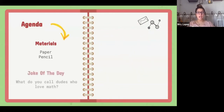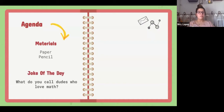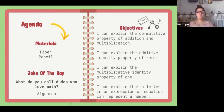Okay, welcome back. We have a joke of the day: what do you call dudes who love math? If you said algebra, then you're right — those are dudes who love math. Our objectives today: we have four objectives. They seem like a lot, but we're going through different identity properties and I want you to know each one of them. I'm going to say the objectives and I want you to repeat them after me.